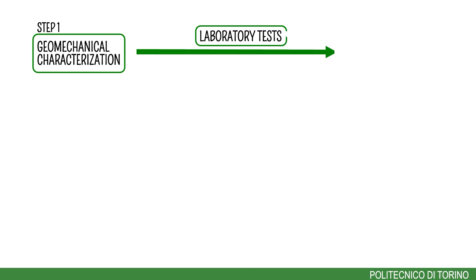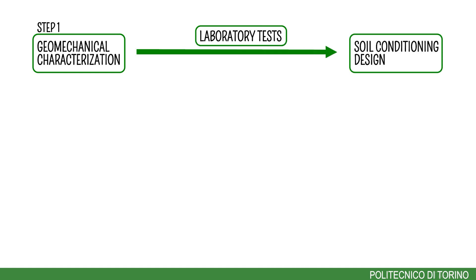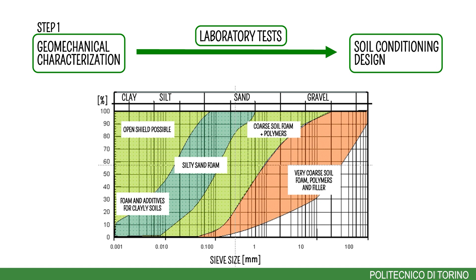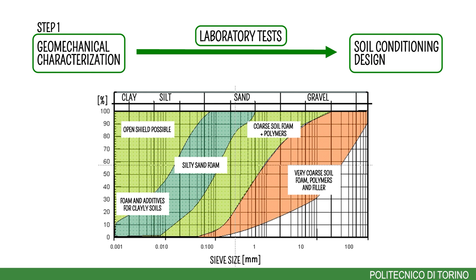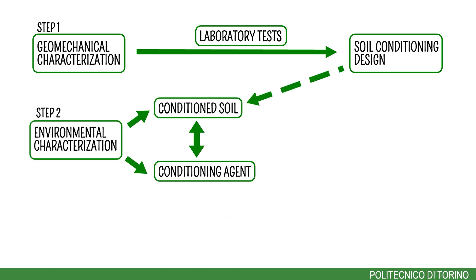The design process of soil conditioning is represented in this scheme and is obtained by three different steps. The first step starts with the geomechanical and geotechnical characterization of the soil properties, and through laboratory tests the needed amount of conditioning agents is assessed. This picture reports an example of possible conditioning products that can be used with different grain size distributions of the soil. For cohesionless soil such as sand and silty sand, foam is the most frequently used additive. The second step requires an environmental characterization of the muck, which needs to be environmentally compatible with the laws and regulations in force. Both the conditioning agents as pure products and the conditioned soil must be tested.